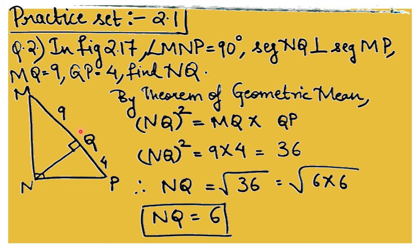Question 1 I have left as an exercise for you — they are very simple questions where you check if the given numbers are Pythagorean triplets or not. We discussed many examples related to it, so that part you have to do yourselves. Let's start with question number 2. In figure 2.17, angle MNP is 90 degrees, segment NQ is perpendicular to MP, MQ is 9, and QP is 4. We need to find NQ.